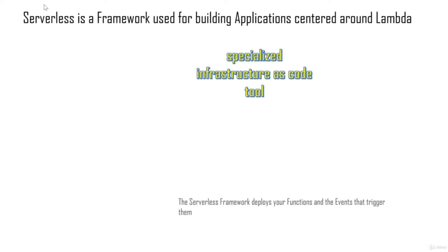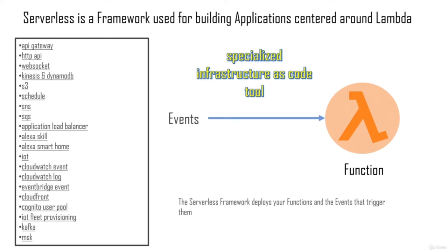There are two important concepts to know before we proceed. The first is called a function — this is basically the code you would be executing in Lambda. The second is the event, which would trigger that particular code. These two form the foundation of the serverless framework. For every serverless application, there would be a function and an event to trigger that function.